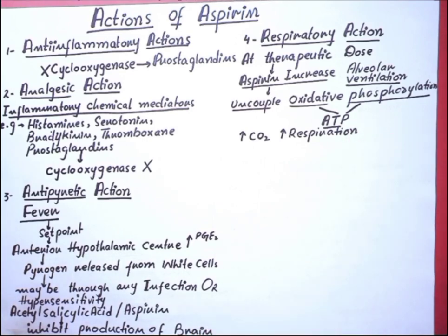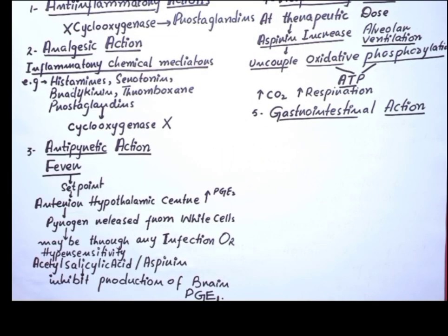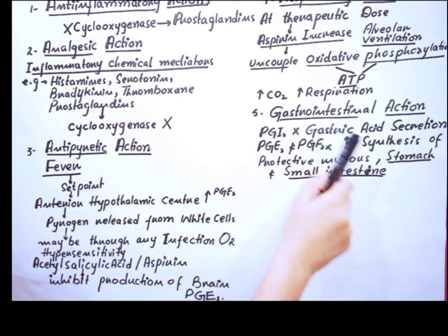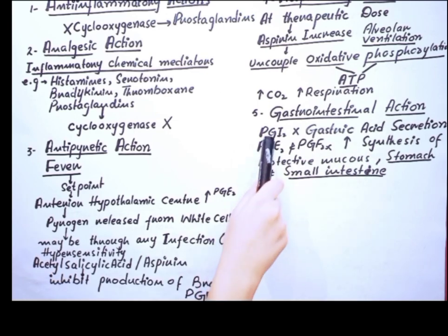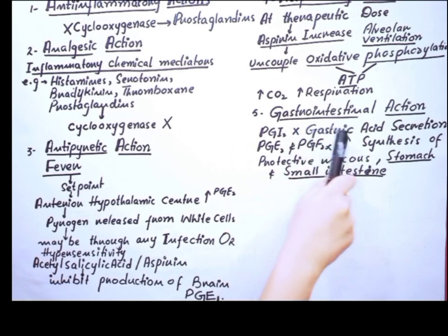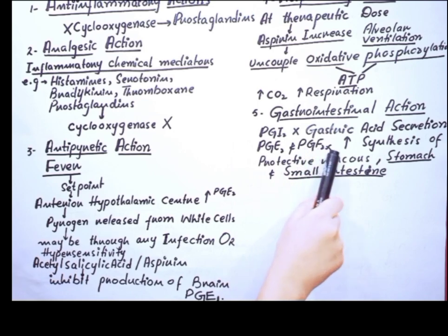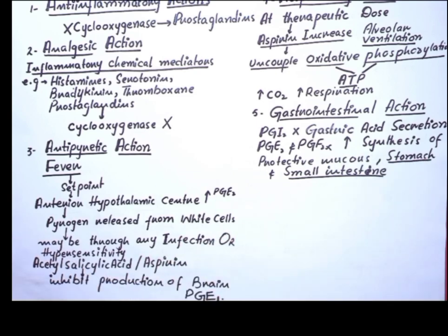Now the gastrointestinal actions of aspirin. In normal conditions, prostaglandin PGI2 inhibits gastric acid secretion, while prostaglandin E2 and prostaglandin F2-alpha increase the synthesis of protective mucus in both the stomach and small intestine.